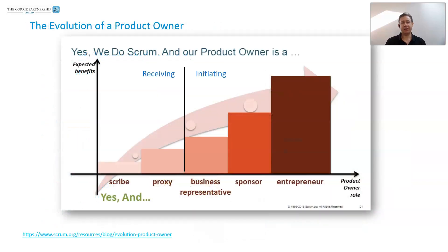We also talk about the evolution of a product owner. Scrum.org have produced this model. At the beginning, if we're not very confident, are we a receiving or initiating product owner? Some product owners are merely scribes or proxies. Others are business representatives or sponsors. But really, we want people in the position of entrepreneur — owning the whole product so they can deliver it as best as possible.